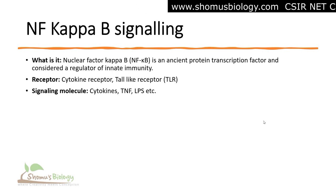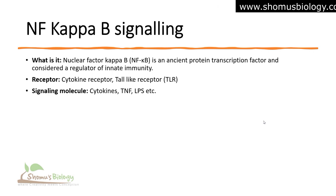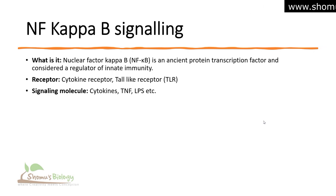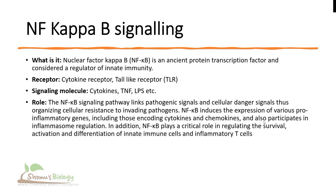tumor necrosis factor, and lipopolysaccharide, which can be detected by the Toll-like receptor. LPS or other pathogen-associated molecular patterns (PAMPs) can be recognized by various kinds of Toll-like receptors on the surface of the immune cell. The role of NF-kappa-B signaling is to link pathogenic signals and cellular danger signals, organizing cellular resistance to invading pathogens.